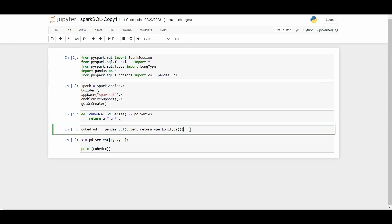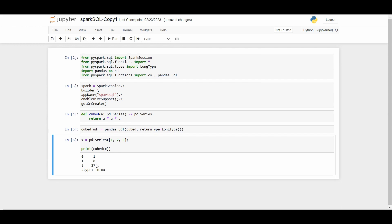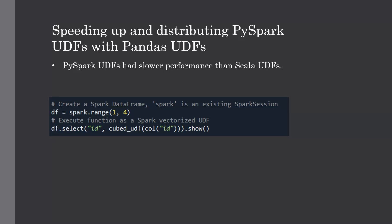Here is a simple example of a Pandas UDF — you import the required packages, build a Spark session, and create the same cube function but as a Pandas UDF using the pandas_udf decorator. When you pass a series of numbers from 1 to 3, you get back their cubes. You can then switch to a Spark DataFrame and execute this function as a Spark vectorized UDF, as shown in the example.